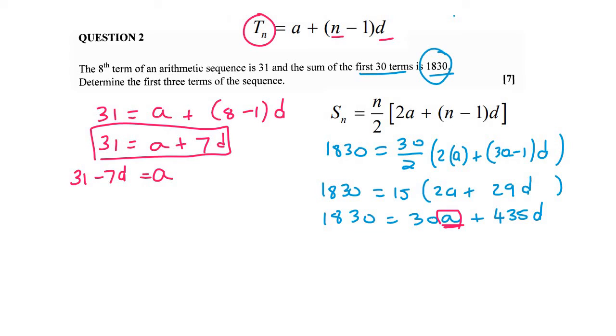And I'm going to now plug that into the place of this A. As I said, some students do simultaneous equations differently. So you do whatever you're comfortable with. And so that's going to be 30, and then A would be 31 minus 7D plus 435D.